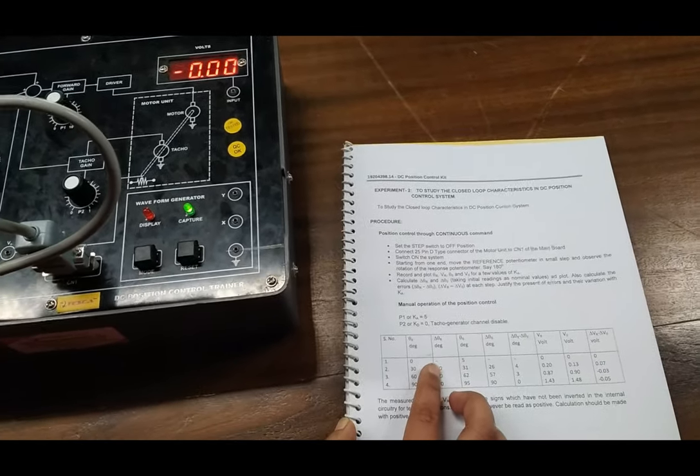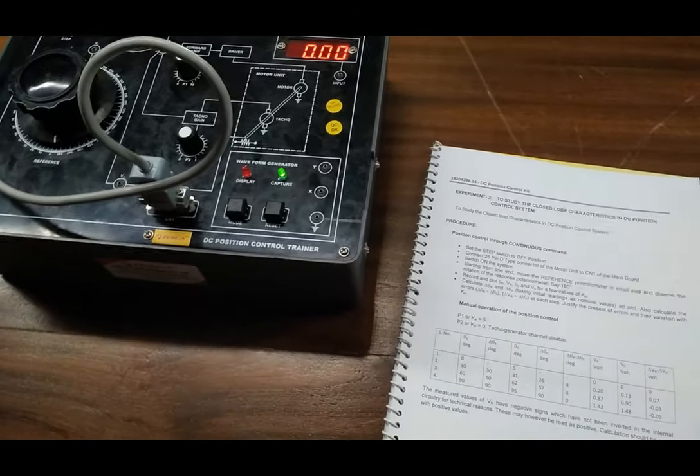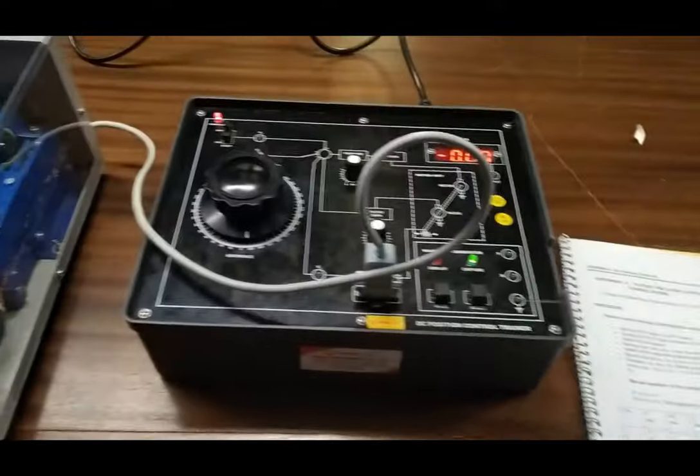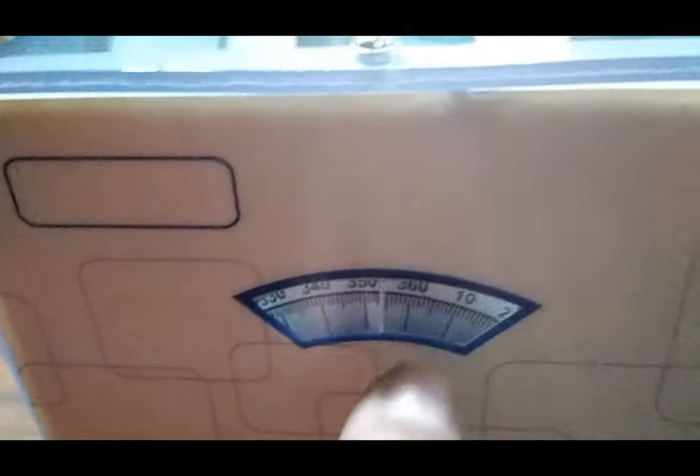So delta theta r equals 0. For theta 0, which equals 355 degrees, the final value is 355 and the initial is also 355, so the difference becomes 0.